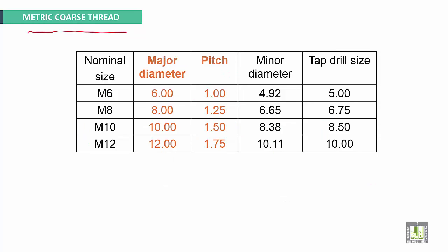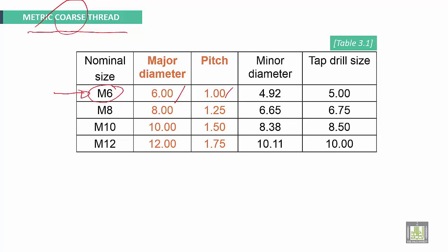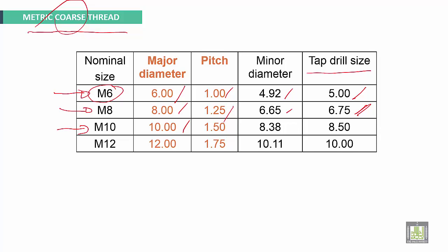Some examples of metric coarse threads: for a nominal size of 6 mm, the designation is M6, meaning the major diameter is 6 mm. Because it is coarse, the pitch is 1 mm, the minor diameter is 4.92 mm, and the tap drill size is approximately 5 mm (standard). For M8, the pitch is 1.25 mm, the minor diameter is 6.65 mm, and the tap drill size is approximately 6.75 mm. For M10, the pitch is 1.5 mm, the tap drill size is 8.5 mm, and the minor diameter is 8.38 mm.